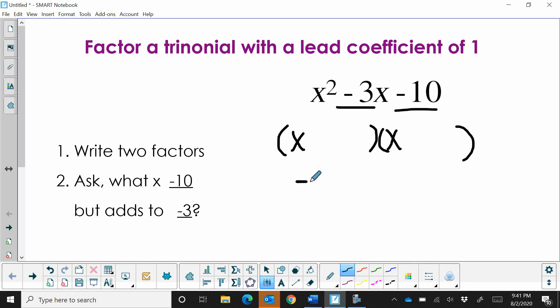So let's look at negative 10. How could we multiply to get negative 10? We could do 1 times negative 10. But if we add those two numbers together, a 1 and a negative 10, we would get negative 9.